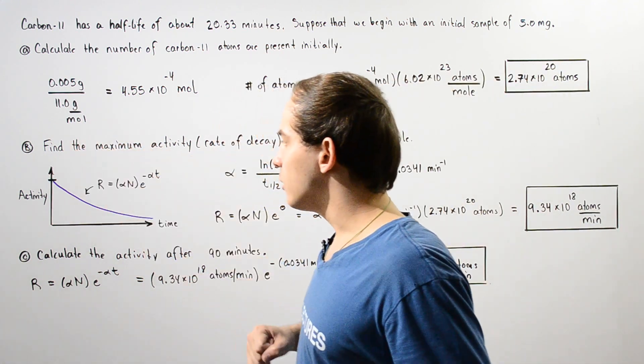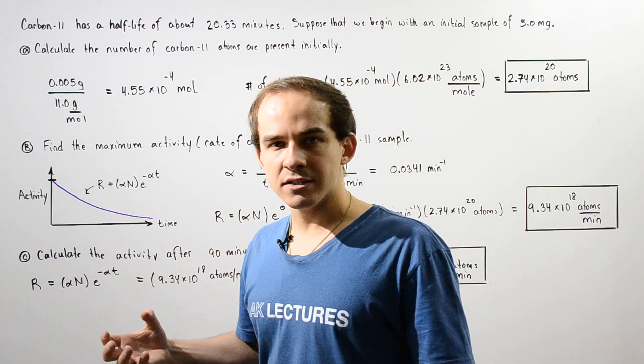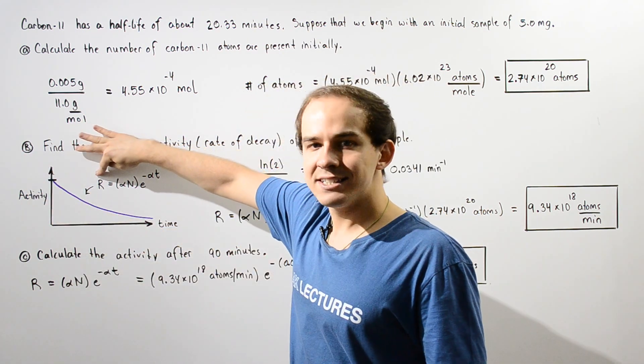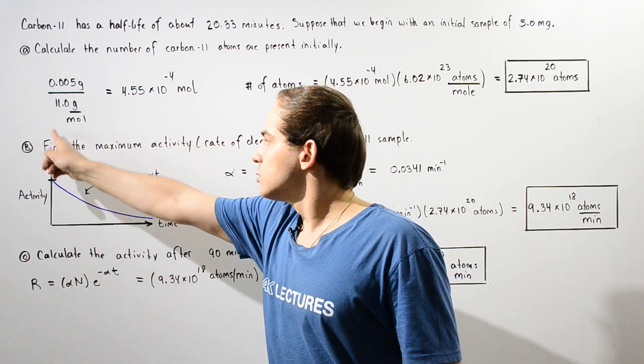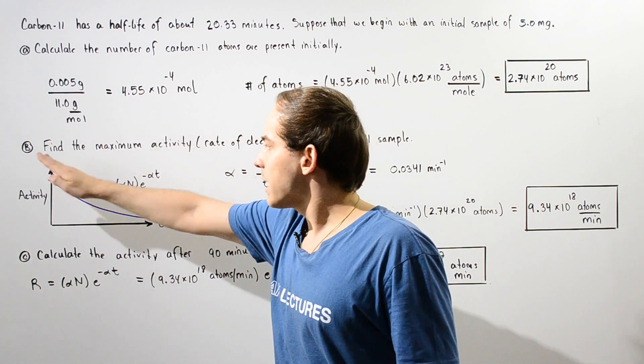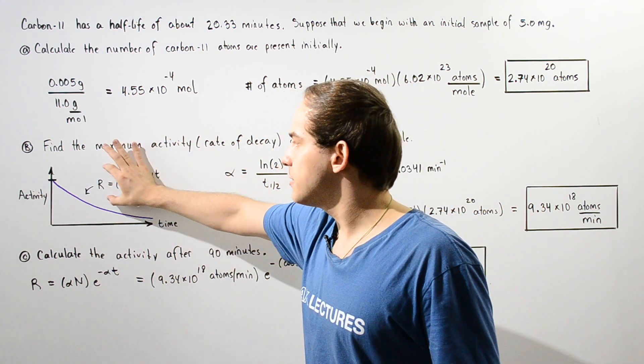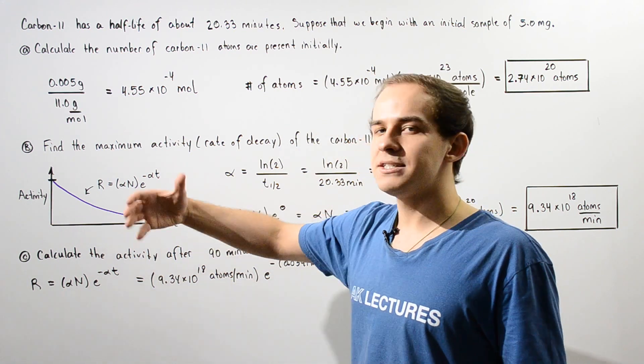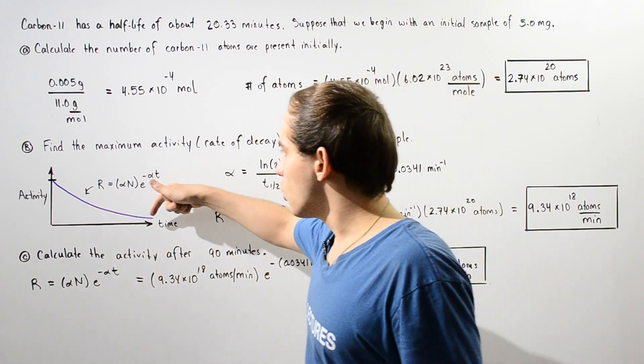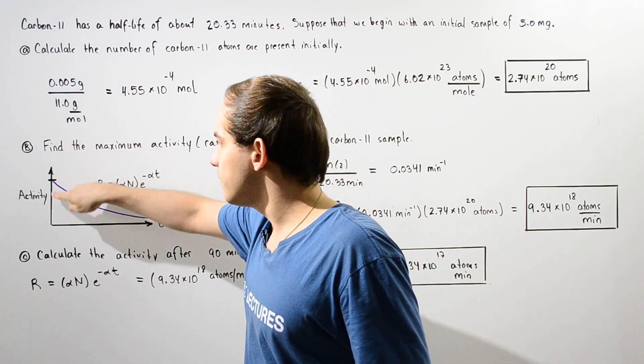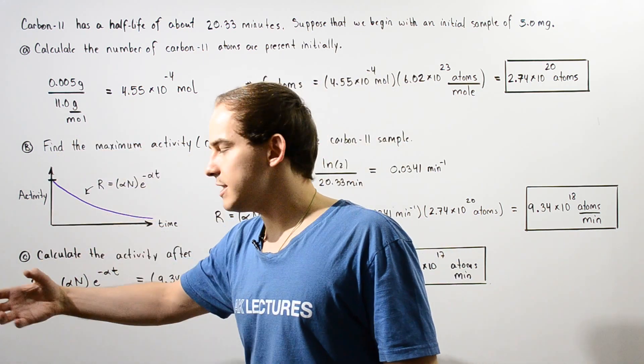If we look at the following curve, this curve basically describes the change in our activity given by R. So the y-axis is the activity given by R and this is the curve given by this equation. And the x-axis is the time given in minutes. Based on this curve, we see that the highest activity is given at a time of zero minutes.